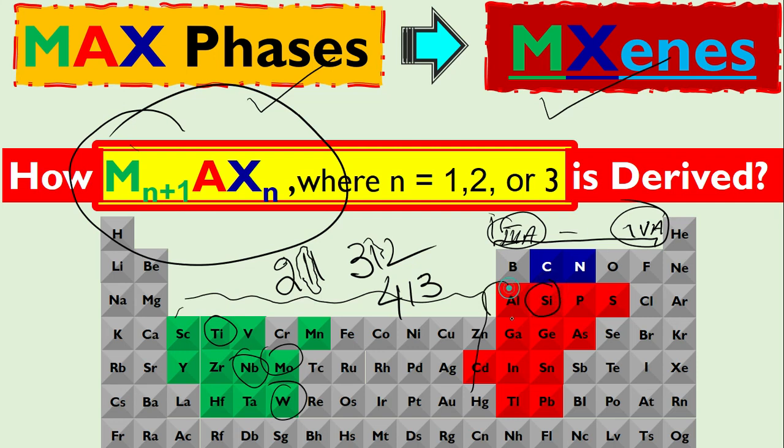This may be silicon, may be aluminum, may be germanium, may be tin, may be lead. And the X is basically only these two: carbon or nitrogen. If it is carbon-based we call it carbides, if it is nitrogen-based we call it nitrides, if it is both-based we call it carbonitrides.